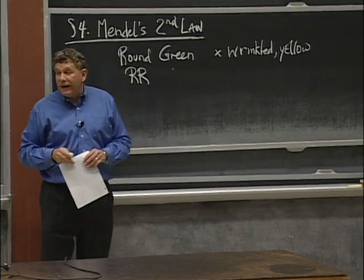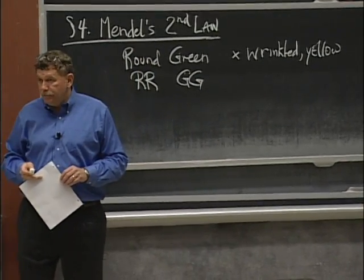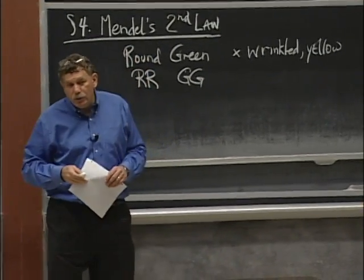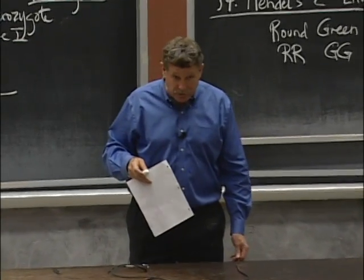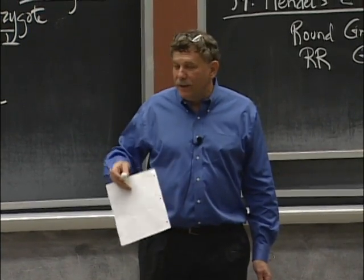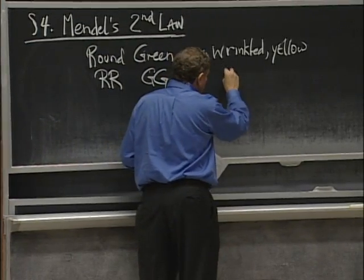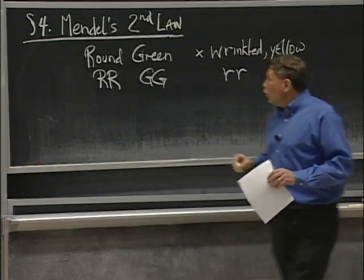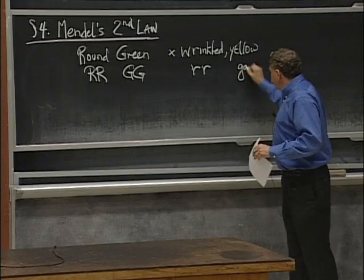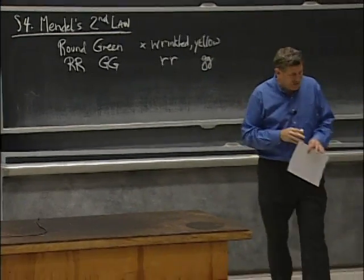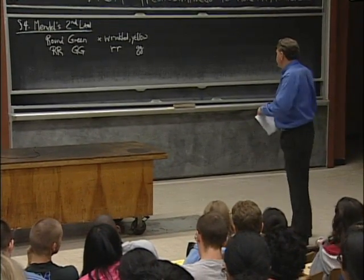Green is controlled by a different gene. It has an allele big G — it's pure breeding for this, big G, big G. By convention, when we use capital letters, it tends to mean that the associated phenotype is dominant. Now wrinkled was homozygous wrinkled, little r, little r. And the genotype at the yellow locus? Little g, little g. Geneticists use four or five different kinds of notations, but we're going to use big R's and little r's and little g's today.